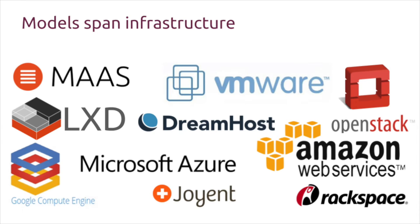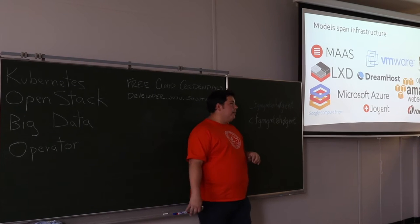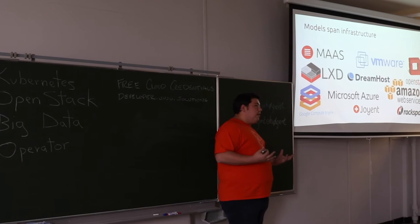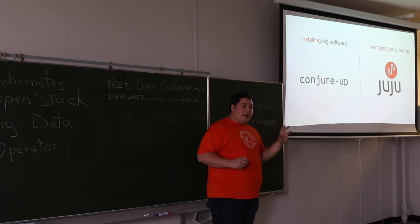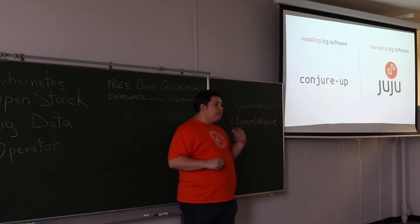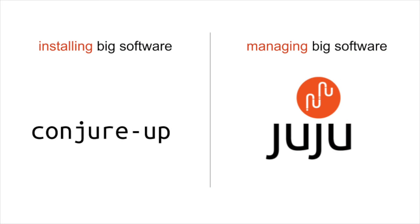With this new era of big software, modeling applications gives us a lot of new properties. For this track we'll discuss two distinct concepts. First, installing modern complex software — using a tool called ConjureUp. ConjureUp helps you get started quickly with modeling the initial implementation: how many machines of each component, what configuration, how to connect pieces together. That initial setup and model definition is done with ConjureUp.